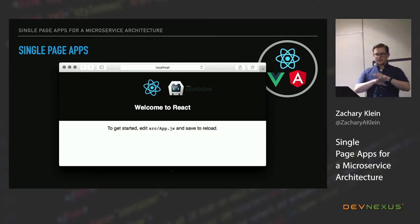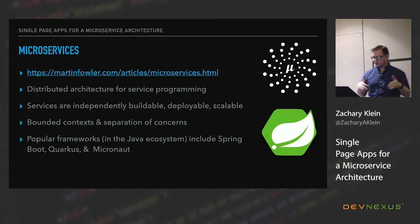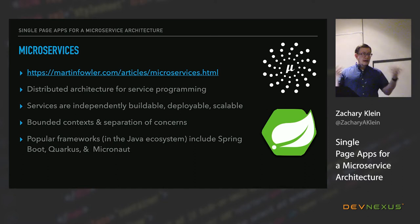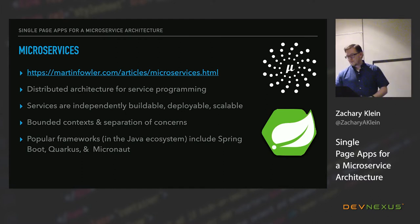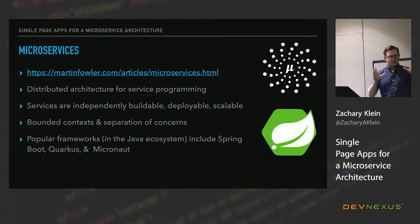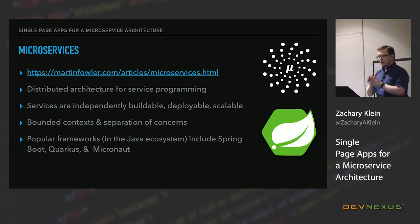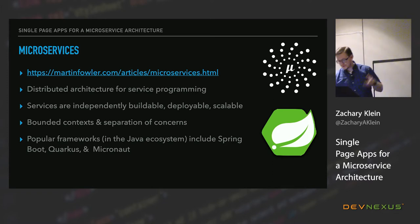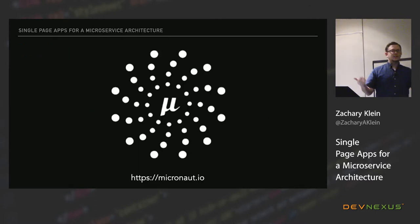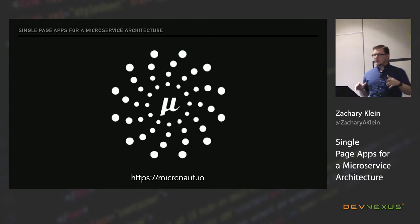Microservices, on the other hand, is a distributed architecture or pattern for back-end development for building web services. Typically these services are independently buildable and deployable, they can be scaled independently. We hear terms like bounded context — the idea that a microservice has a set of concerns and data that it controls and exposes to the rest of the world. Popular frameworks in the Java ecosystem would be Spring Boot, Quarkus, and also Micronaut, which I contributed to and will be discussing in this talk.